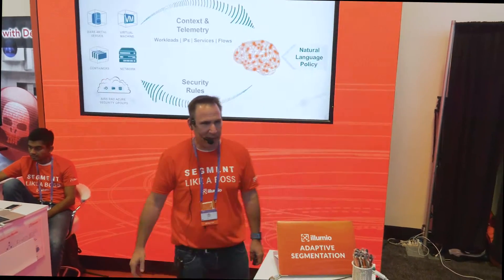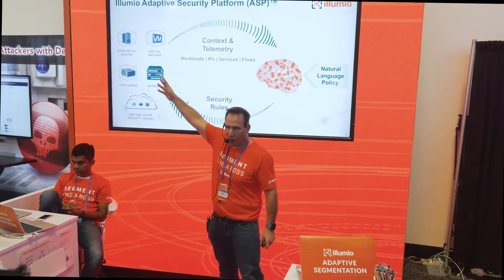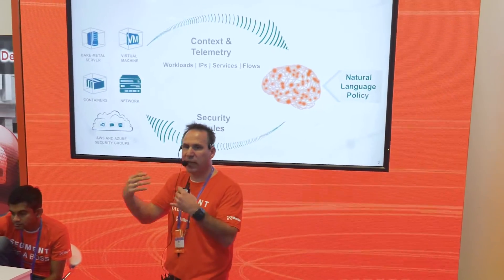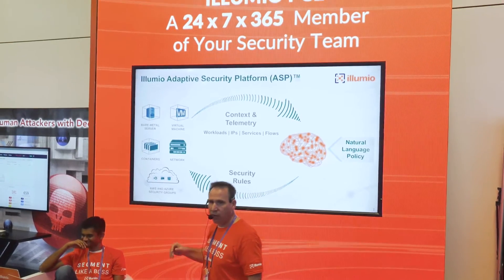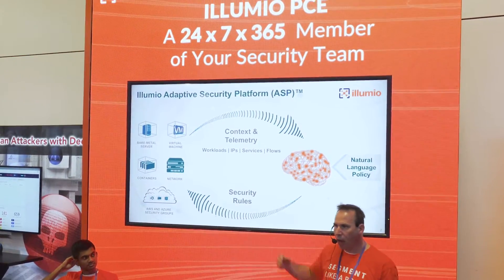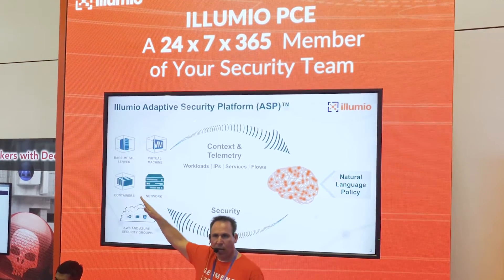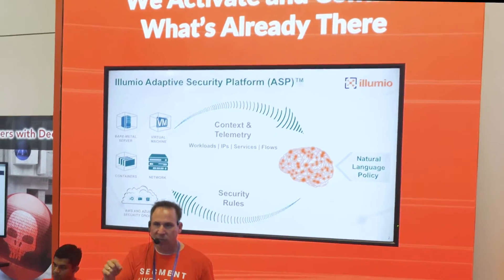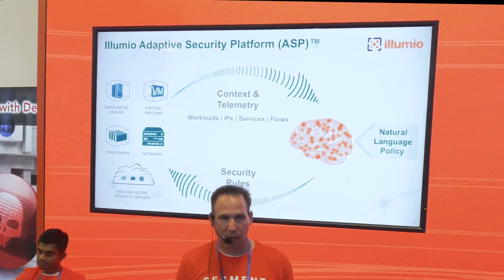My last slide before we get into demos is just to quickly orient you to the architecture. Our architecture starts with context and telemetry, which we pull out of hosts. We can put an agent on the host to pull out interfaces, operating system info; we can pull it from CMDBs or orchestration systems. This information is sent up to the policy compute engine — think of it like a brain. You write natural language policies into it, and it computes the optimal security for every one of your workloads and sends it back down to the optimal enforcement point. It could be IP tables or the Windows filtering platform. The key point: we use what's already there. Don't forklift your switches — we'll just add more value to them. Don't change your hypervisor.